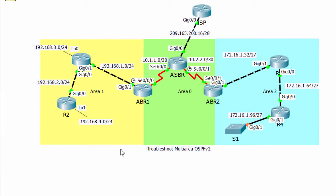This is our topology. We have three areas. In area 1, router 2 is unable to form an OSPF adjacency with router 1. In area 2, router 4 is unable to form an adjacency. Area 0 is behaving as expected.